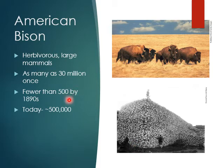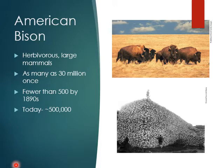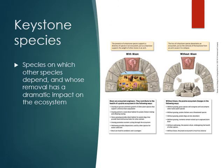Bison numbers got down to fewer than 500 by the 1890s. Today we've made a pretty good comeback — nowhere near 30 million, but closer to half a million. People are working really hard to conserve the prairies and hopefully grow the bison population. Every organism in an ecosystem has its niche — its role. We talked about bees last time as a keystone species, and bison are also keystone species.